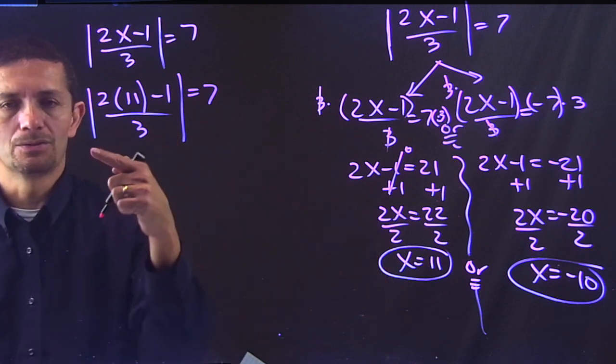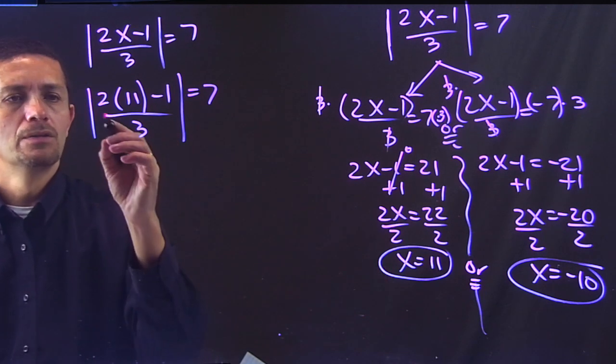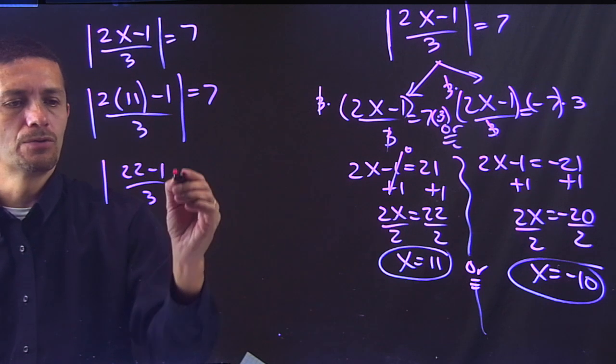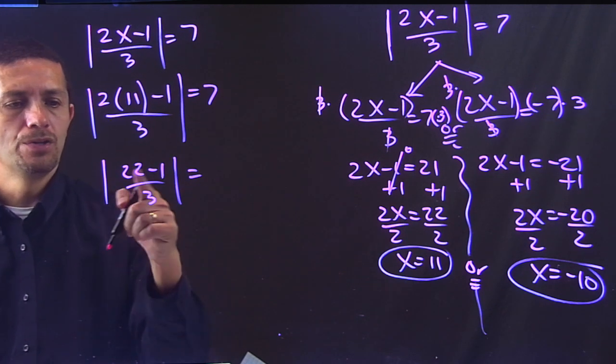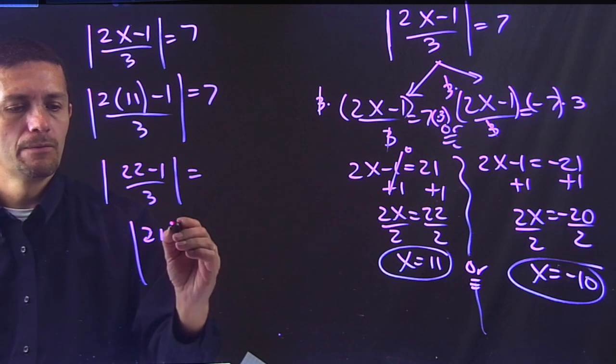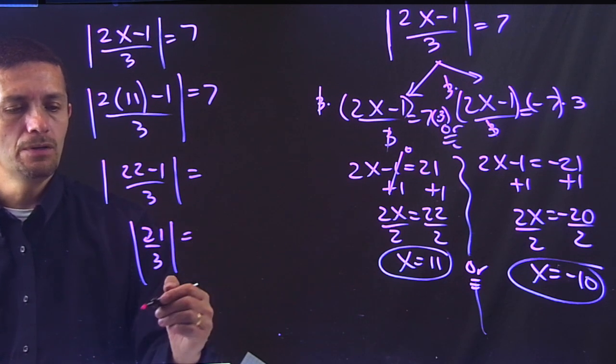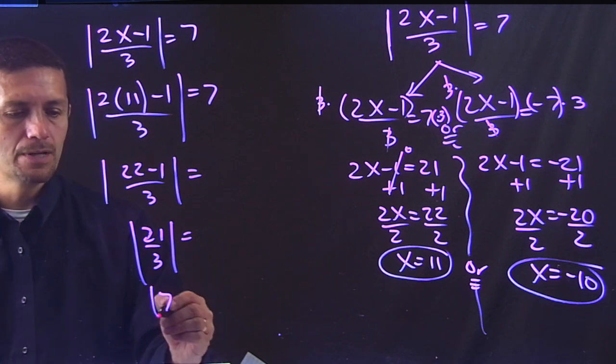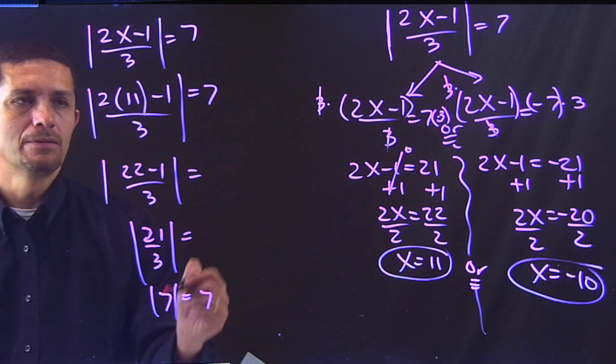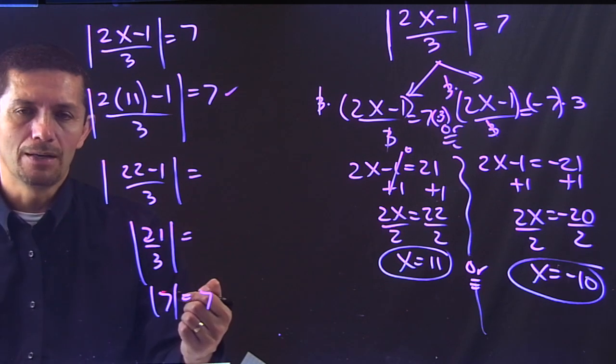I'm checking my answers. That's what I'm doing right now. So 2 times 11 is 22 minus 1 over 3. 22 minus 1 is 21 over 3. 21 divided by 3 is 7. An absolute value of 7 is 7. So it's going to check that out.